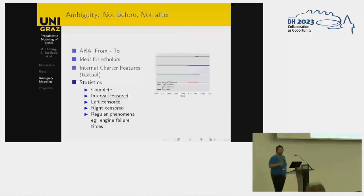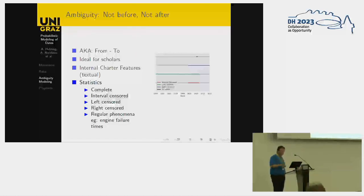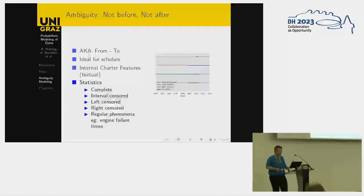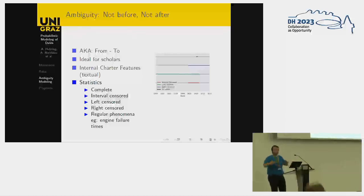If we go a bit into the statistics literature — and I'm really a tourist there, I'm not a statistician in any way — we would talk about complete data being a precise date, interval censored being a range in time, or left and right censored being unknown boundaries. The thing is that literature cannot directly help us, because it was developed for a totally different kind of thing — it was meant to predict engine failures and things that are highly regular. But in our case, every document is its own unique snowflake, so assuming regularity and therefore an easy global model of ambiguity doesn't really make sense.